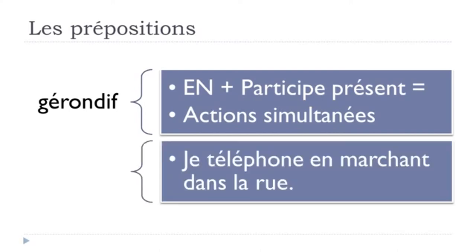Here is an example: 'je téléphone en marchant dans la rue.' 'Téléphoner' is to call, and 'marchant' is the participe présent of 'marcher' — to walk. So the structure expresses that you are making a phone call and at the same time walking in the street. That's the technique to express two simultaneous actions — the gérondif — constructed with the preposition 'en' plus the participe présent.